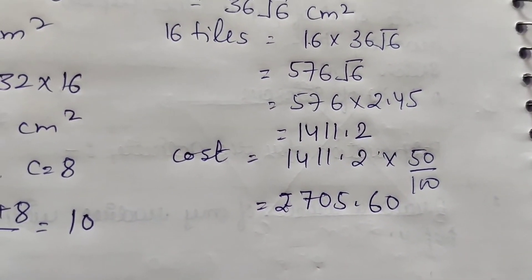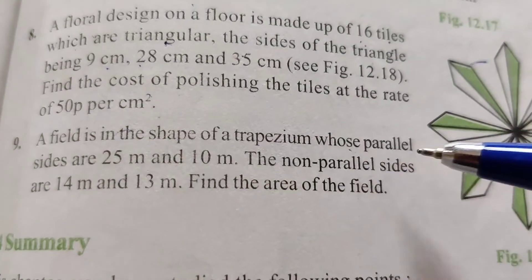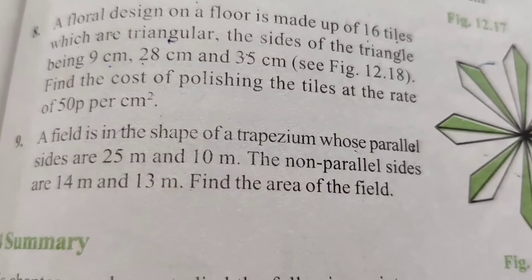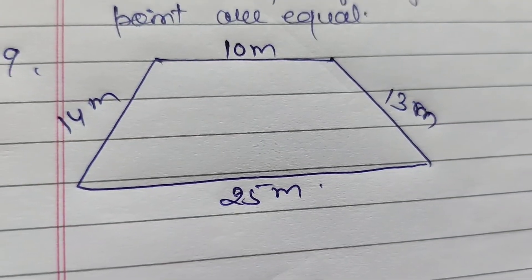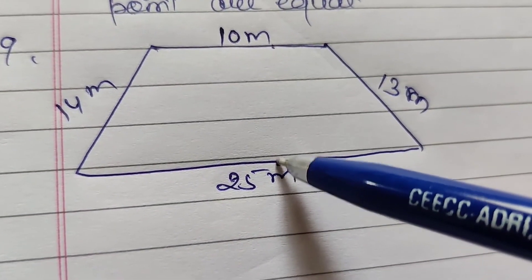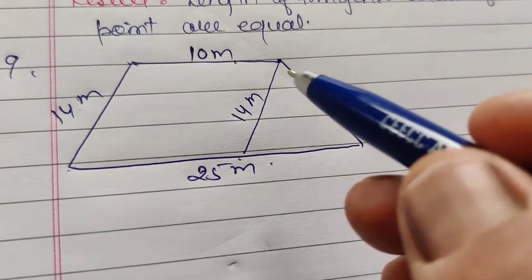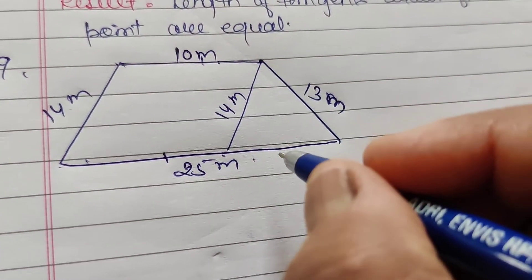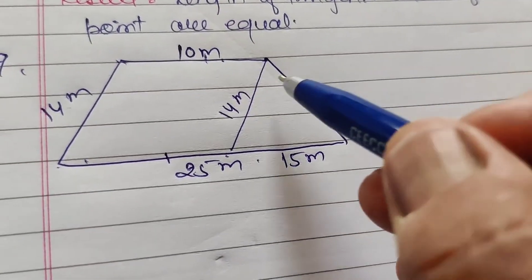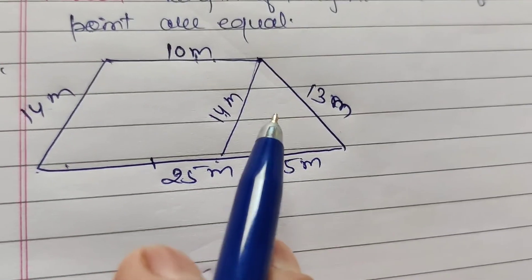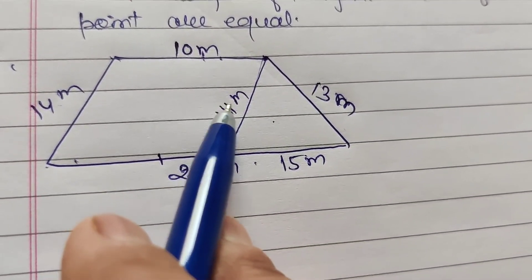Question number 9 (last question): A field is in the shape of a trapezium whose parallel sides are 25 m and 10 m, and non-parallel sides are 14 m and 13 m. Find the area of the field. Draw a line parallel to the 14 m side, creating a scalene triangle with sides 13, 14, and 15 m (since 25 minus 10 equals 15 m).